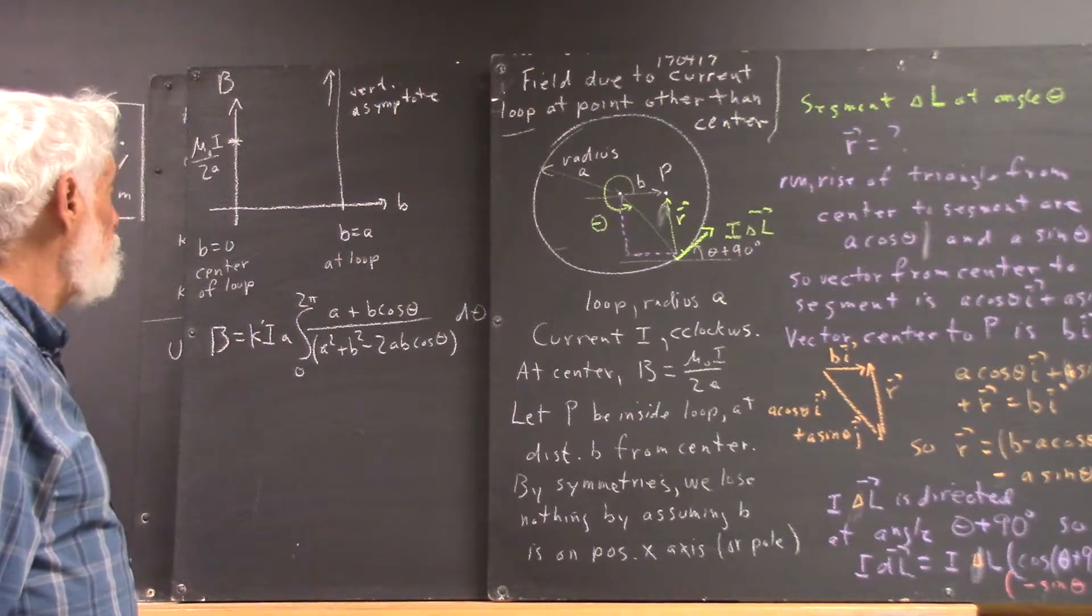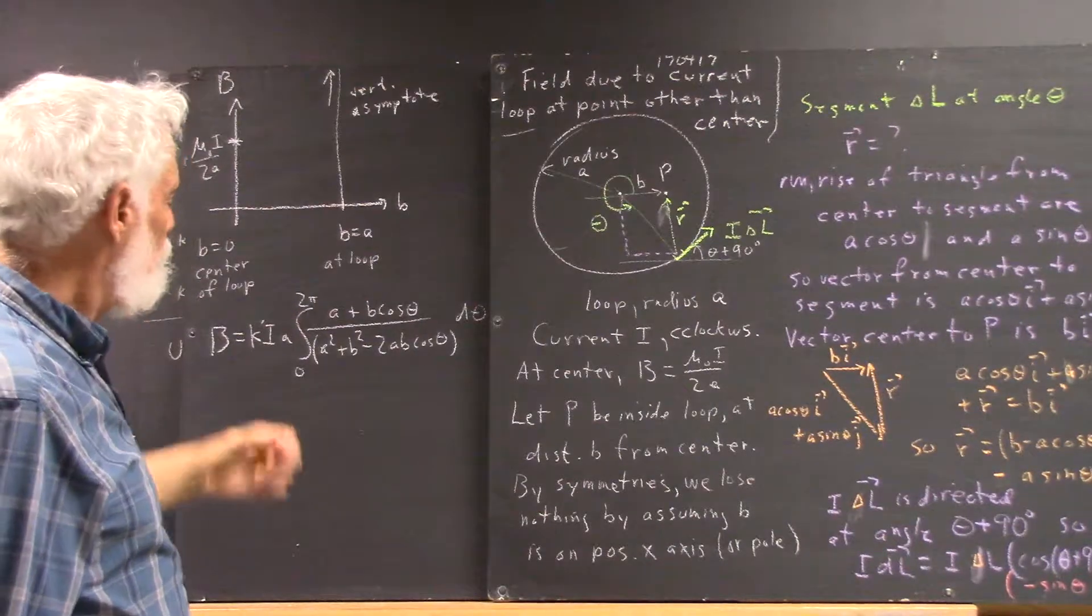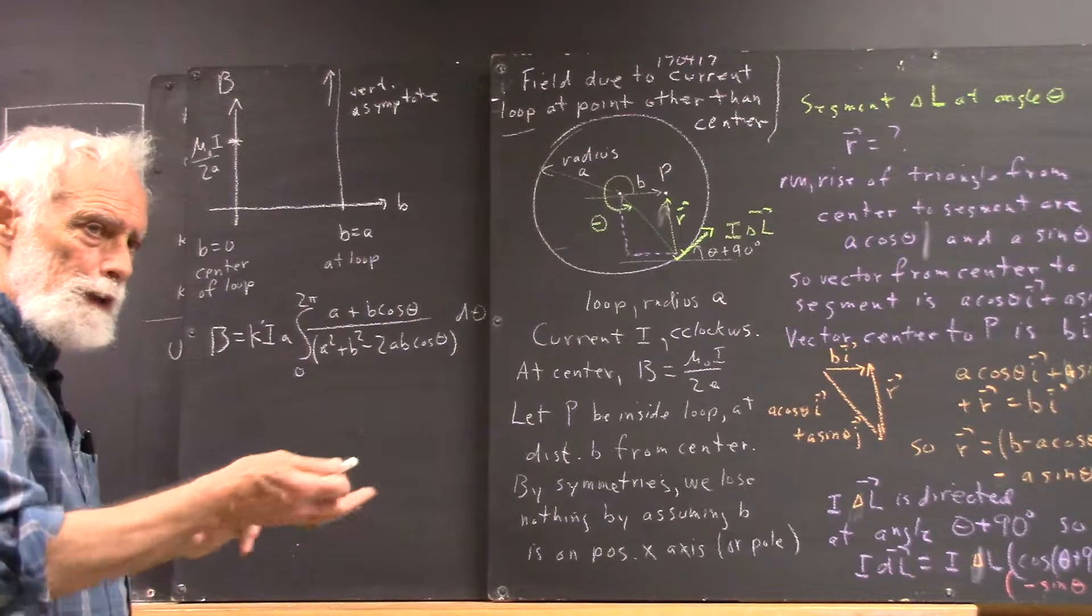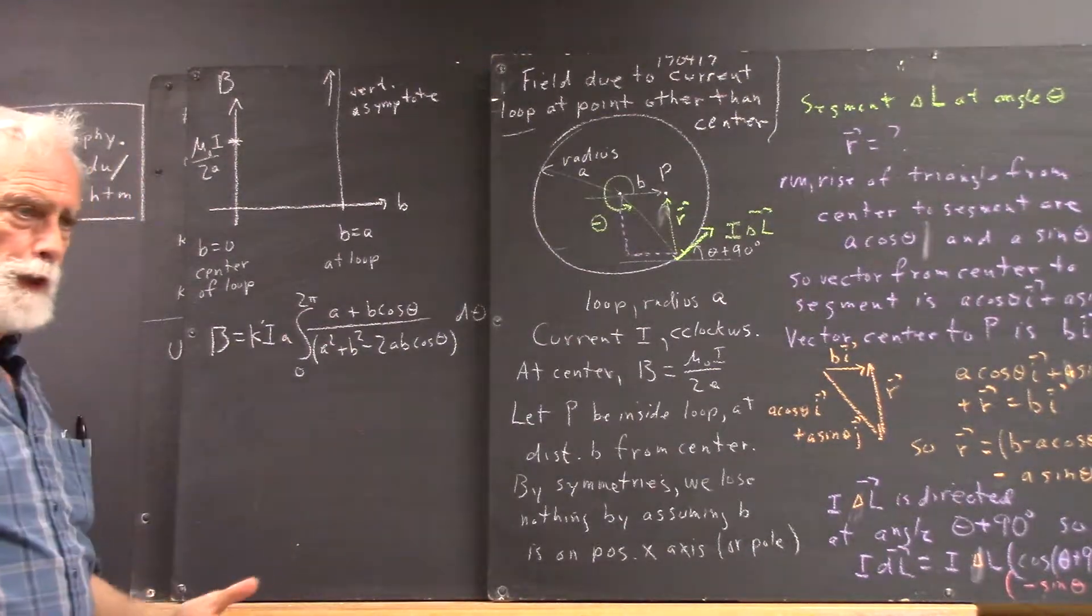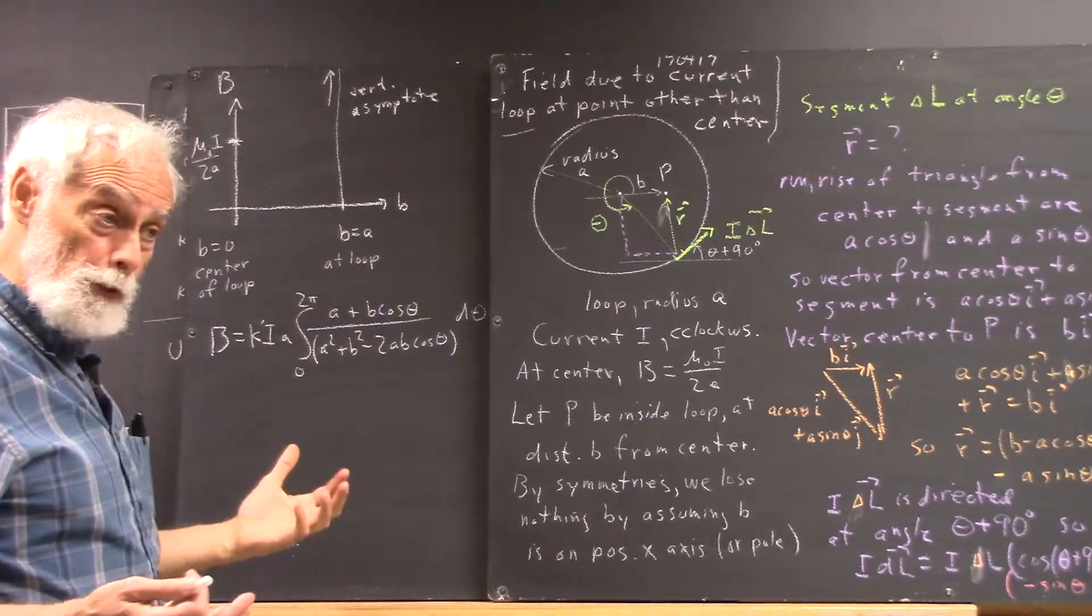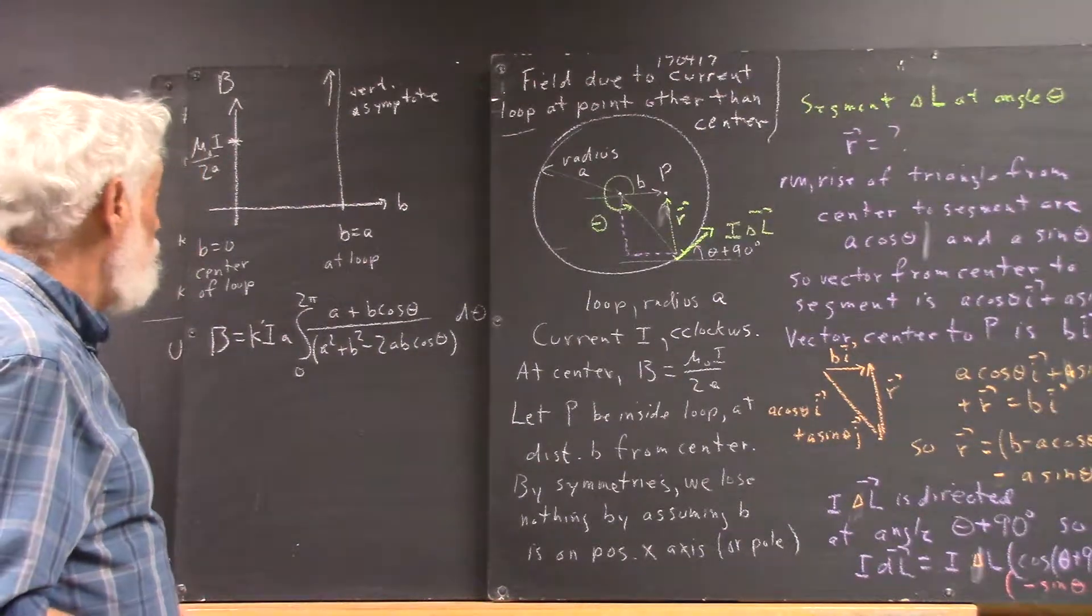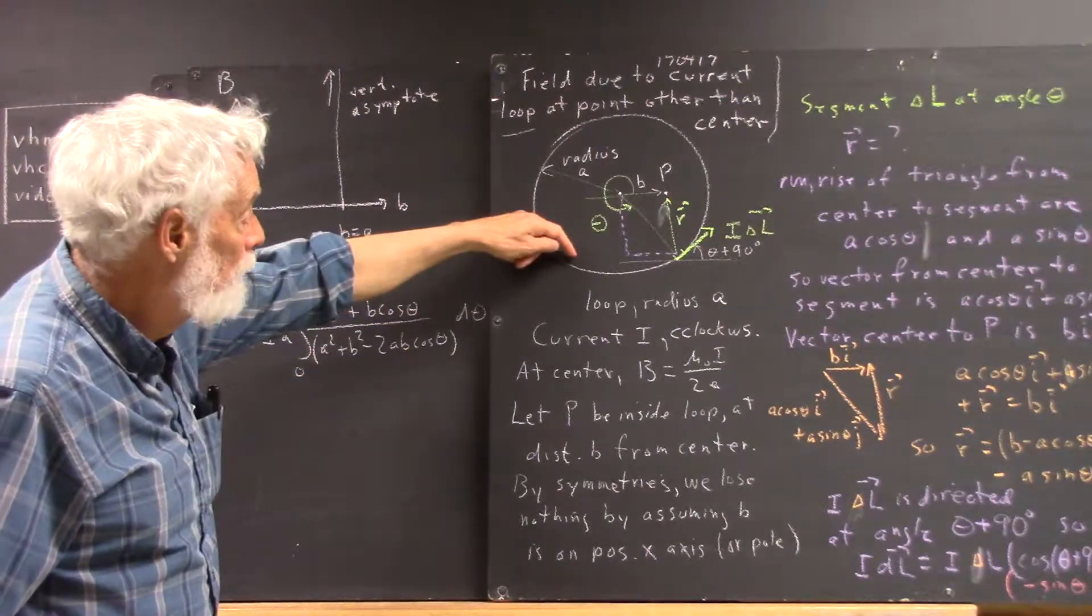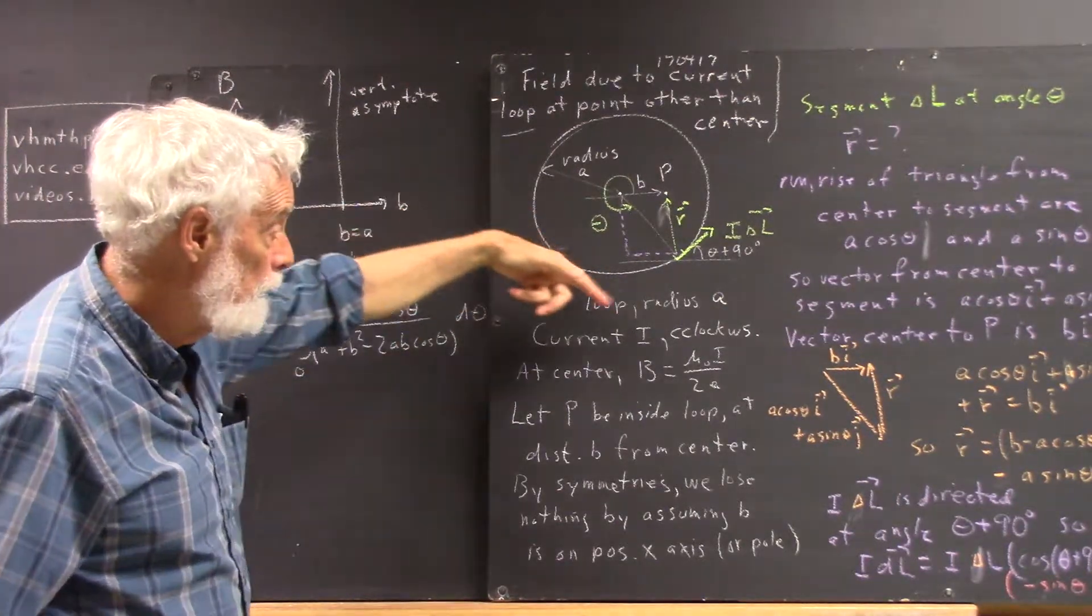Another thing is that as you approach the loop, the loop starts looking more and more like an infinite straight line. You don't see its curvature, just like people believe the Earth is flat. Some people actually still want to believe that. People believe the Earth is flat because they don't see the curvature. As you approach the loop, you don't see the curvature, and the loop becomes essentially an infinite straight line carrying current I.